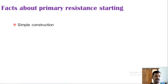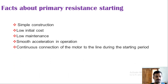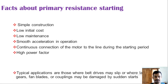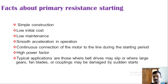Key facts about primary resistance starting: it is simple in construction, has low initial cost, and requires low maintenance. It provides smooth acceleration and maintains continuous connection of the motor to the line during starting — there is no interruption of power at any stage, unlike star-delta starting where the supply is interrupted during changeover. The resistance also compensates for the inductive nature of the motor, resulting in a high power factor during starting. Typical applications include weld drives, large gears, span blades, or couplings that could be damaged by sudden starts.